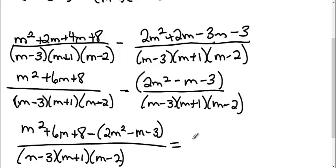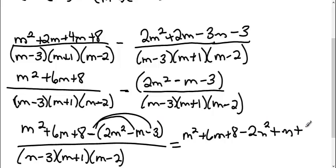Okay, then I'm going to distribute this here. So I get M squared. I still have 6M plus 8. Distribute that negative. So I get negative 2M squared. Positive 2M squared. Positive 3.